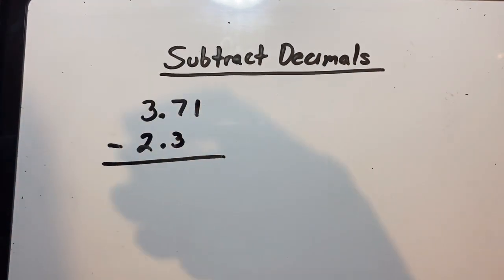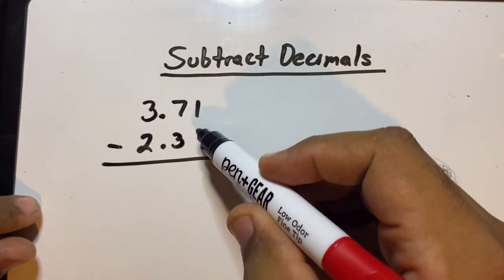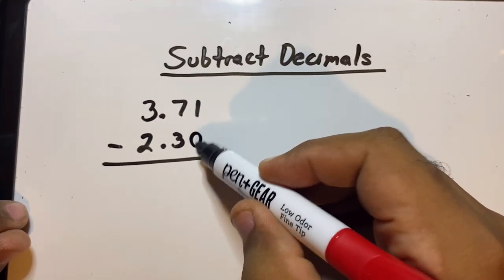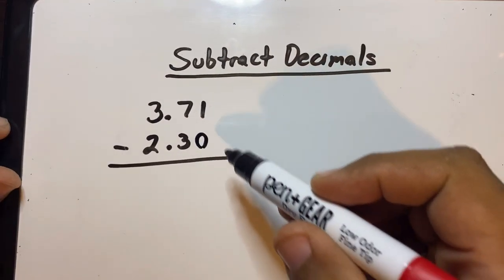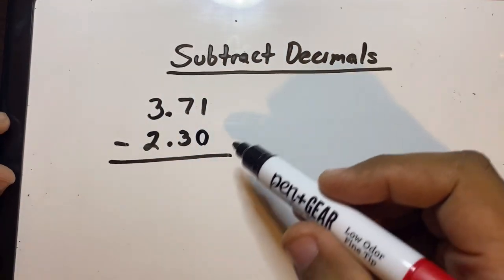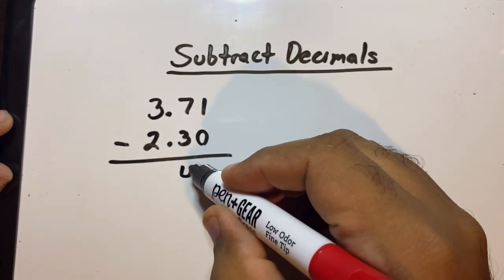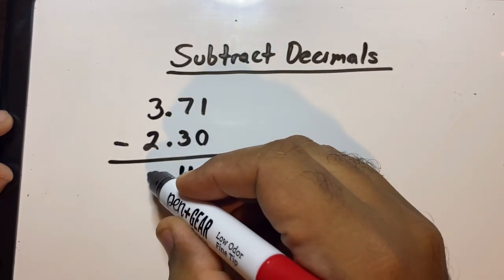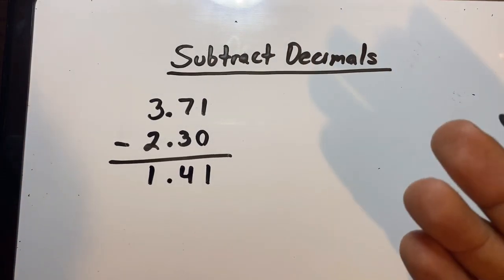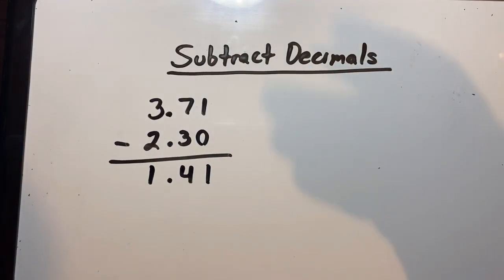Just like in addition, if there's nothing here but there's a digit on top of it, you can just add a zero. So now we have a fair decimal equation. 1 minus 0 is 1, 7 minus 3 is 4, and then 3 minus 2 is 1.